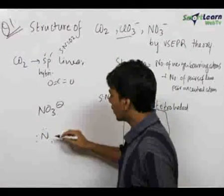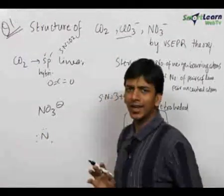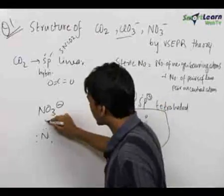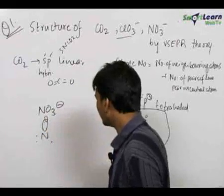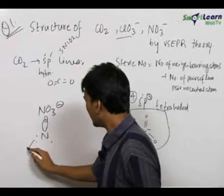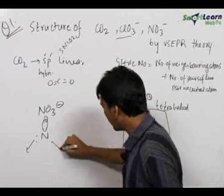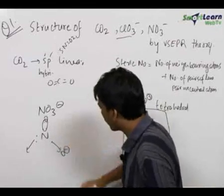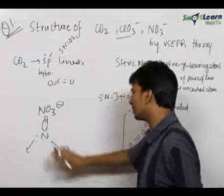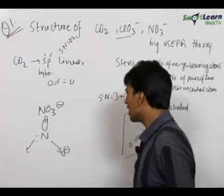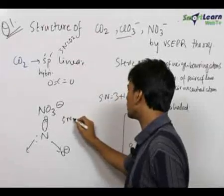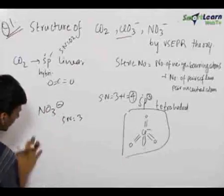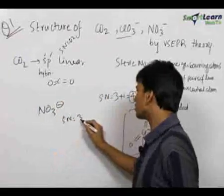To get a tentative idea, nitrogen requires 8 electrons in its outermost shell to complete its octet. It will take two electrons from one oxygen atom to form a double bond, then donate one pair via a coordinate bond and take one electron from another oxygen via a single bond. From this tentative bonding, we can see that the steric number will be equal to 3, with no lone pair on the nitrogen atom.